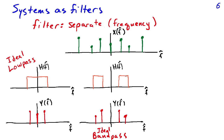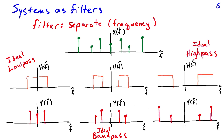We multiply the spectrum of the input times the frequency response to get the output — this is a very intuitive operation. An ideal high-pass filter passes the higher frequencies and attenuates the lower frequencies, blocking lower frequency components while allowing higher frequency components to pass. Viewing a system in the frequency domain, where the spectrum of the output is the product of the frequency response and the spectrum of the input, leads to a very intuitive and powerful characterization of systems.